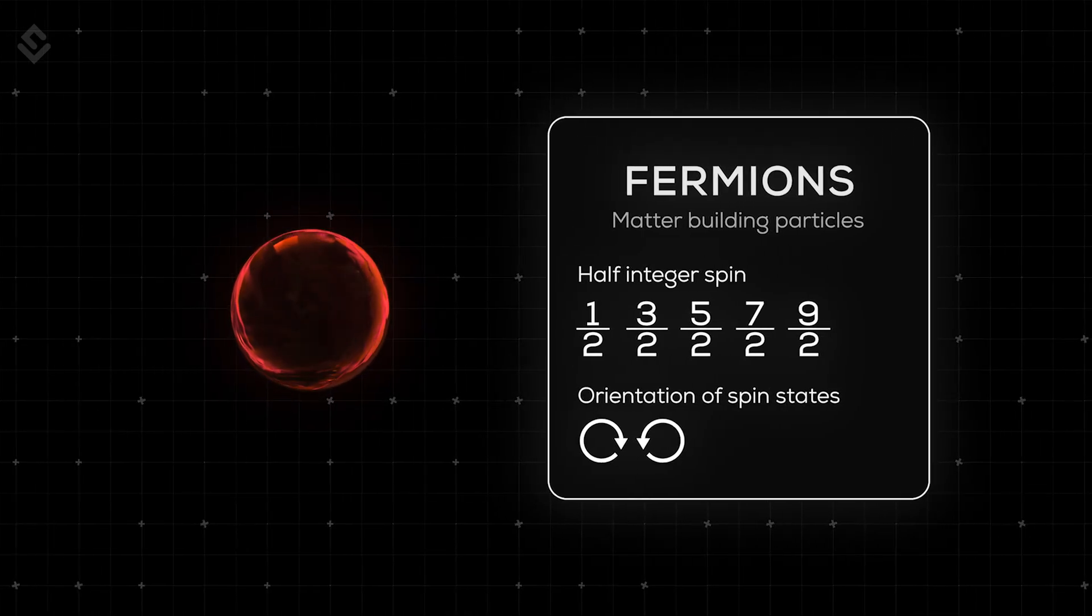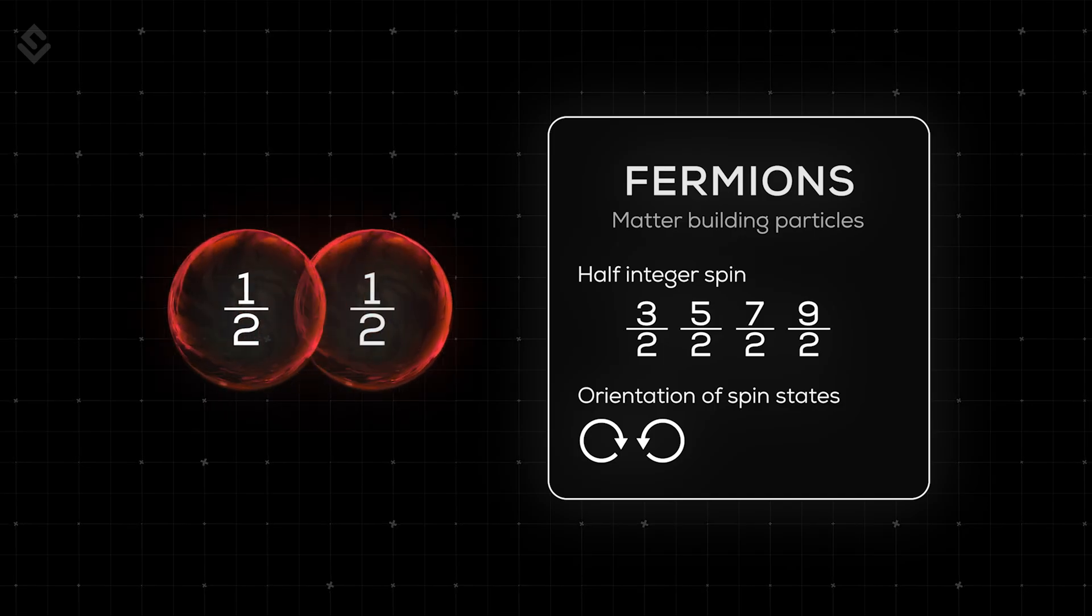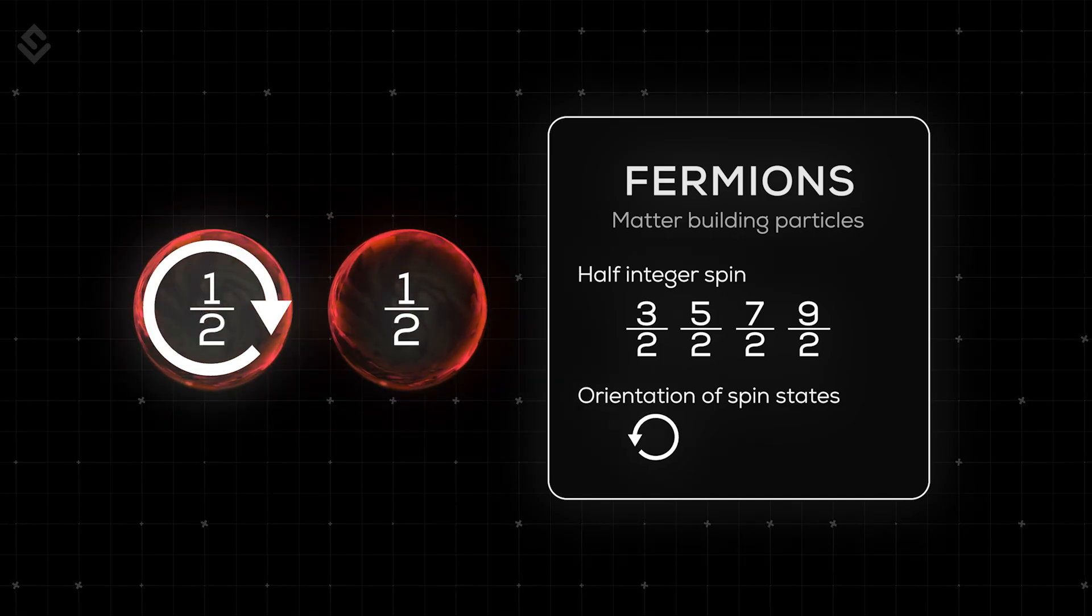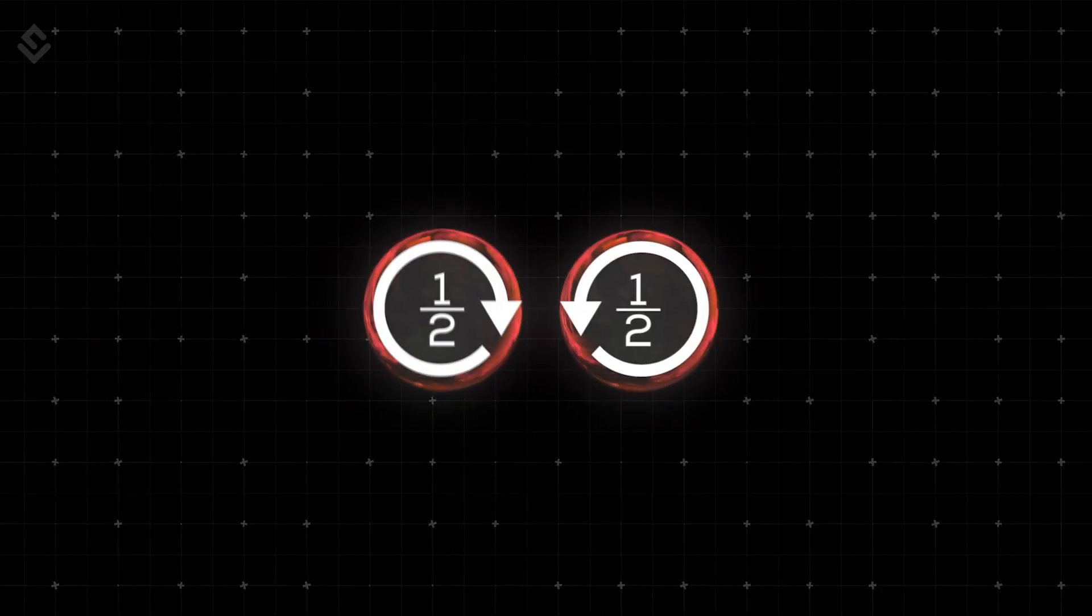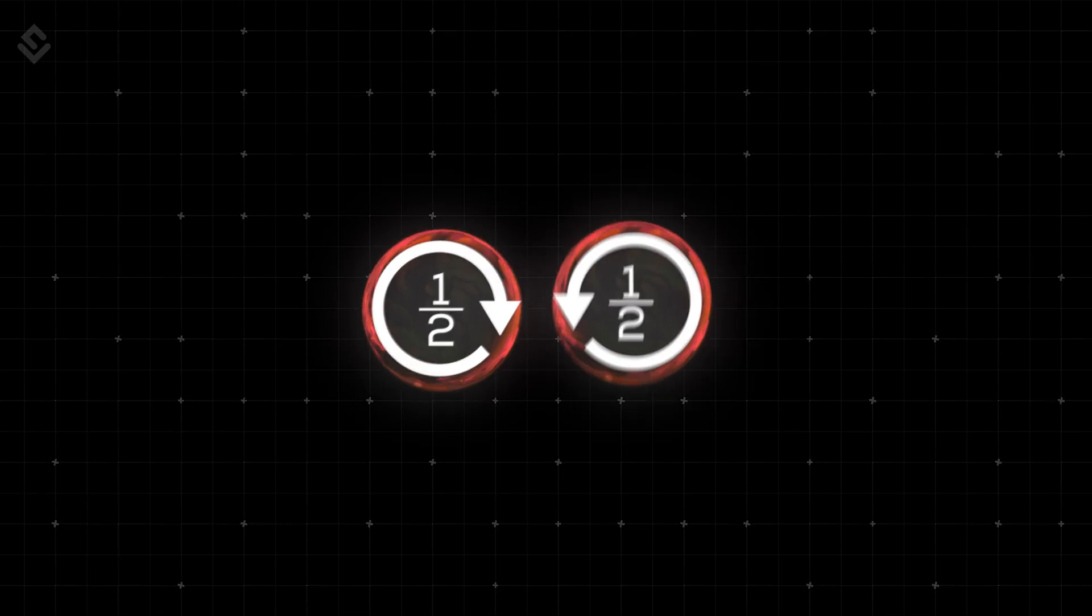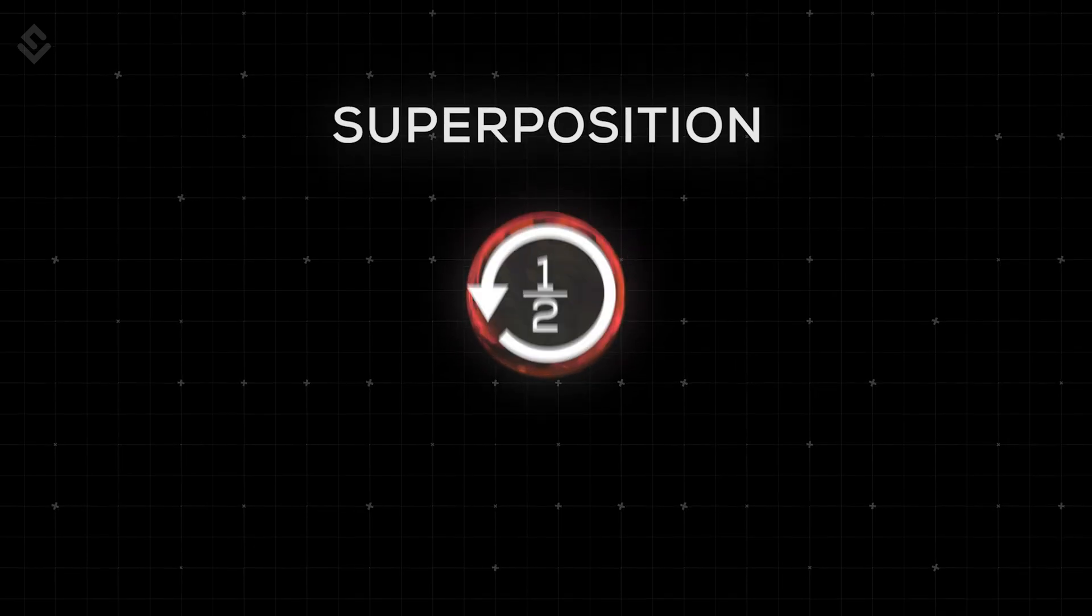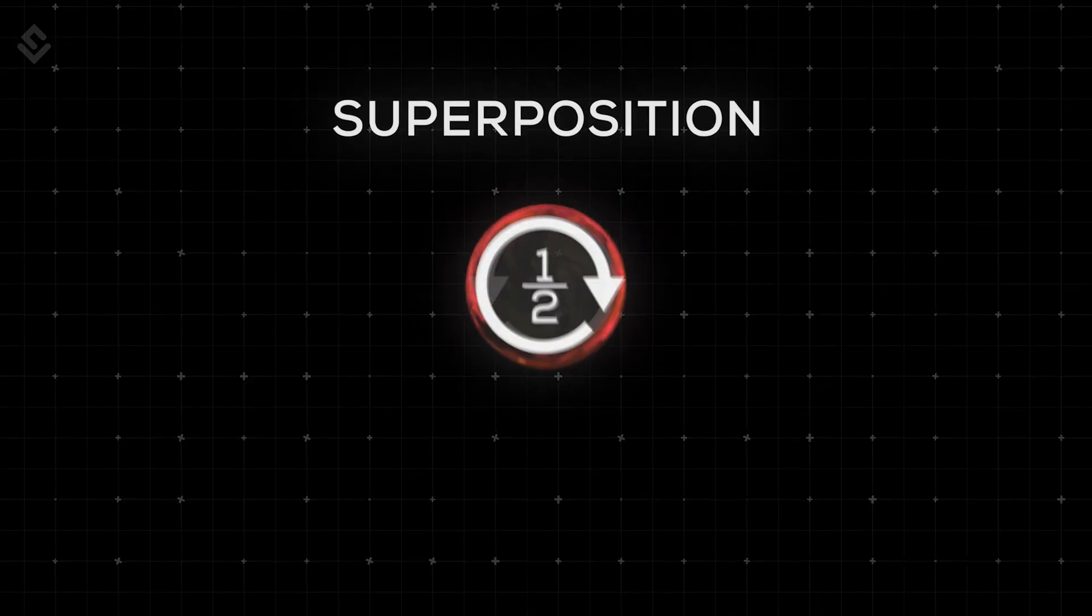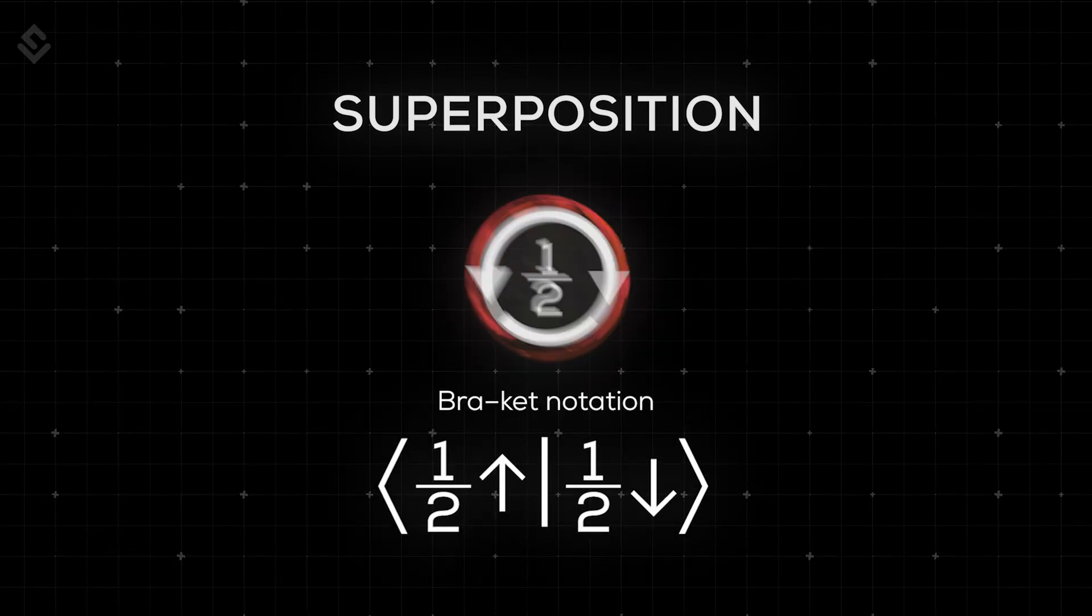An electron has a spin value of 1/2 and thus it may exist in two states: 1/2 upward and 1/2 downward. Since quantum particles show their states only in probabilities, there are chances of these two states coexisting simultaneously. This property is called the superposition principle. This arrangement can be mathematically shown using the bracket notation, such as 1/2 upward and 1/2 downward.